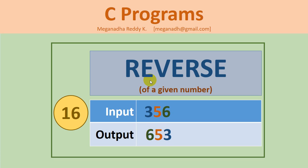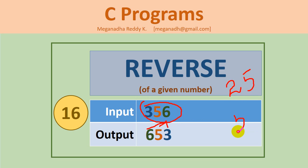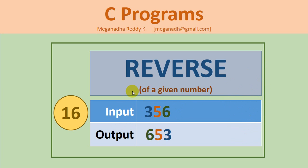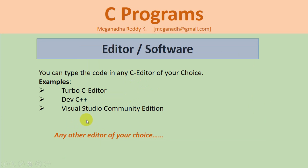Hi, this is Megnath. In this video we are going to learn a C program to print the reverse of a given number. For example, if we enter 356, the output should be 6, 5, and 3. If you enter 25, the output should be 52. We just need to read a number from the user and print its reverse. I'm going to type the code in Visual Studio Community Edition, but you can use any editor.